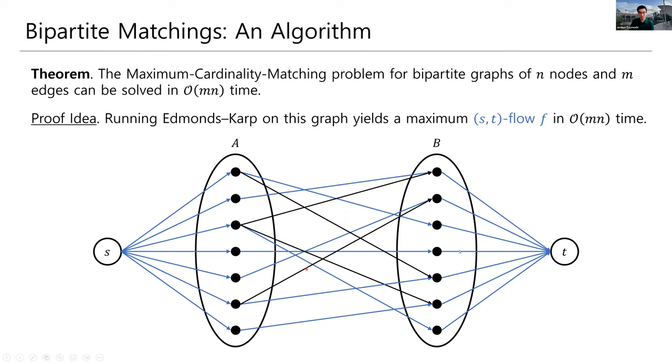So, in this particular case, I've colored all of the edges used by the flow in blue. So, we can see that, actually, in this particular case, it's possible to find a perfect matching. Or, rather, one that covers every single possible node in the graph. And, this happens in polynomial time, because Edmunds Carp runs in polynomial time.